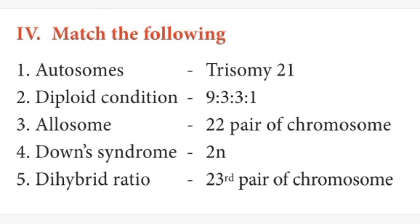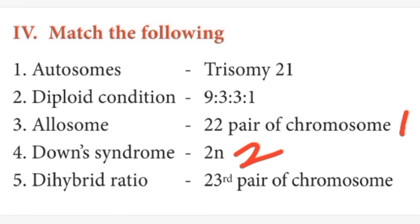Fourth row: match the following. First question: autosomes — answer is 22 pairs of chromosomes. Third question: allosomes — answer is the 23rd pair of chromosomes. Fourth question: Down syndrome — answer is trisomy 21, because Down syndrome is a genetic condition in which there is an extra copy of chromosome 21.